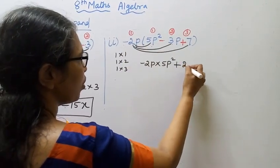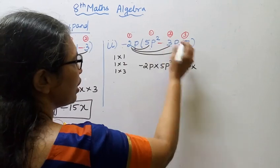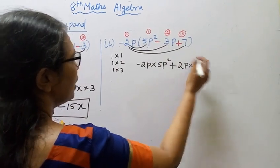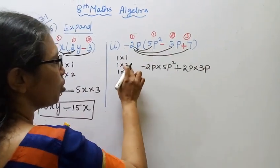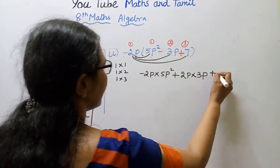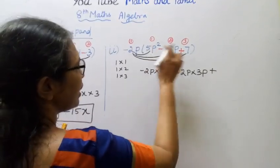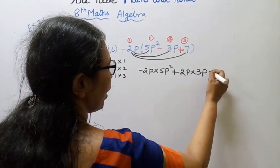Next part: minus plus into 3p minus 2p. 1 into 2, plus minus into plus gives minus.